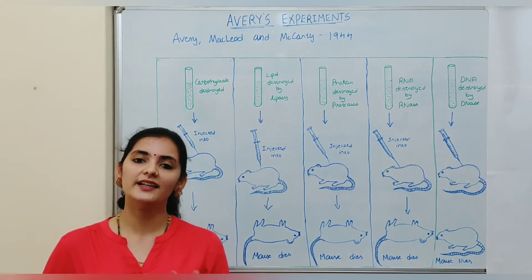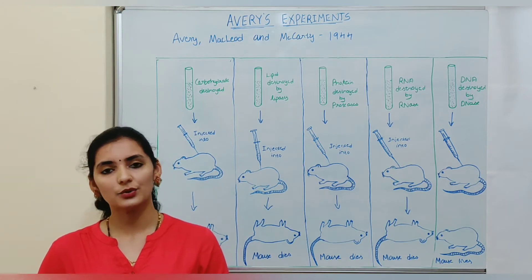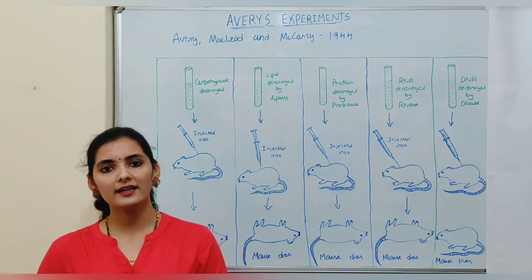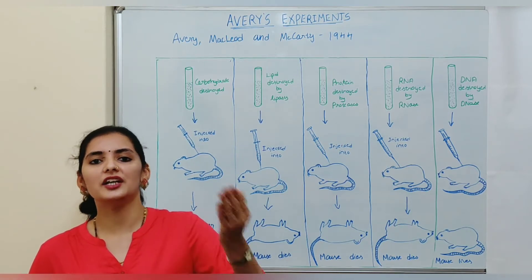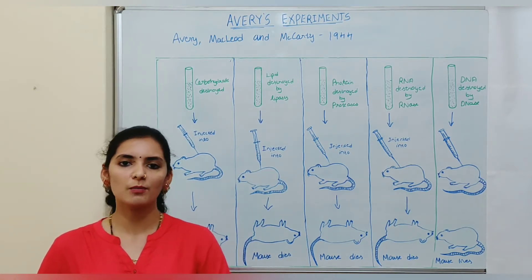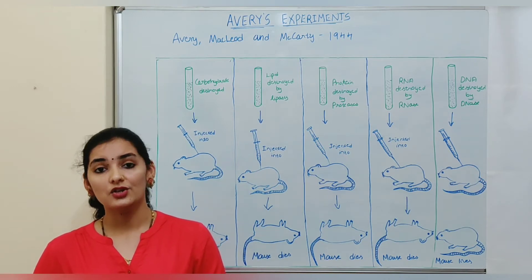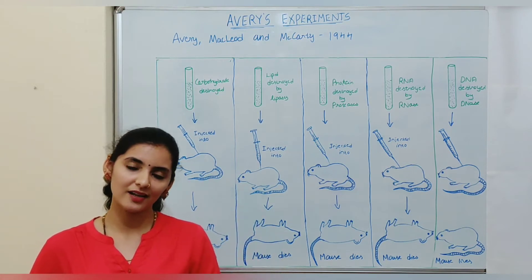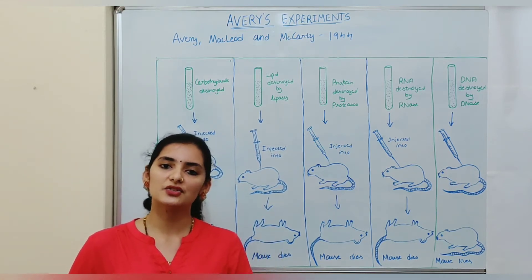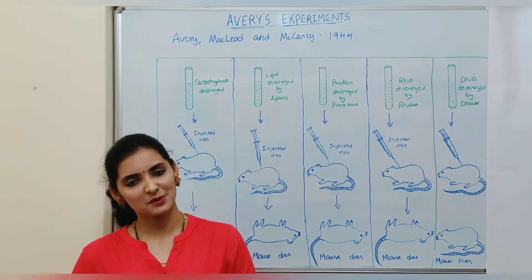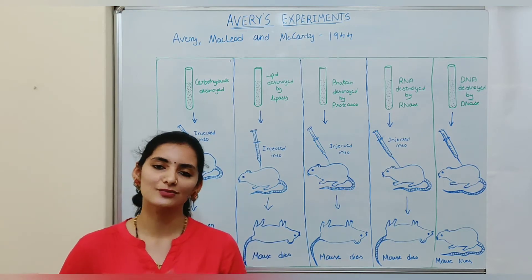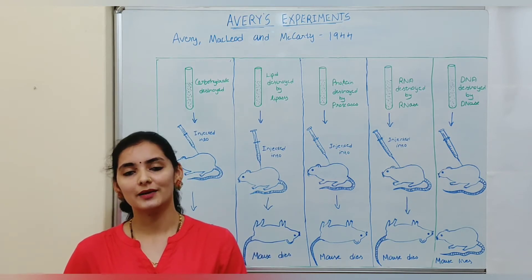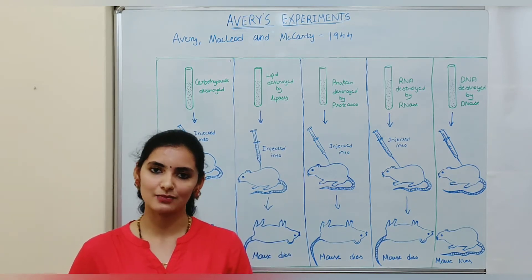Griffith had not injected live S strain — instead he injected heat-killed S strain. Heat-killed S strain cannot change into live S strain. So the R strain must have been transformed into S strain; something from the heat-killed S strain was transferred to the R strain, permanently converting it into S strain. Griffith called that the transforming principle, but he could not explain its chemical nature.